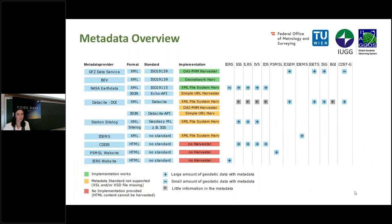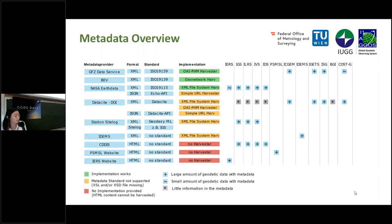This is one of the last graphics. This overview shows which metadata have already been harvested successfully in green, and which ones cause difficulties in yellow and red. Metadata from GFZ, BETHANY, and NASA have already been imported successfully, and this also covers large parts of the ERG services, as you can see in the table on the right side.